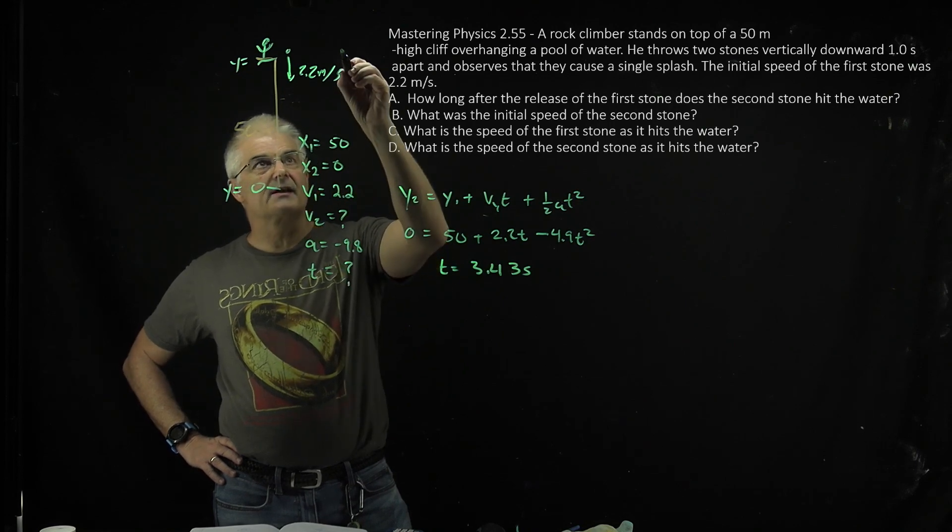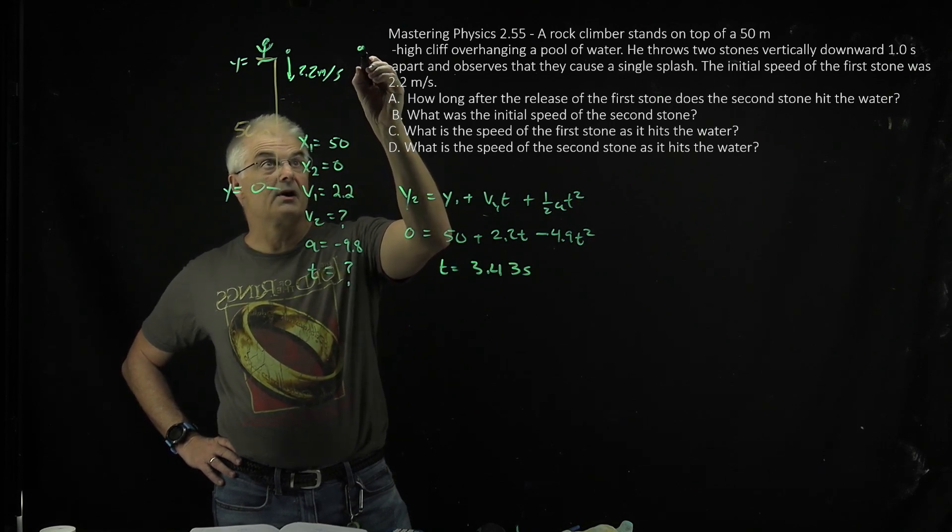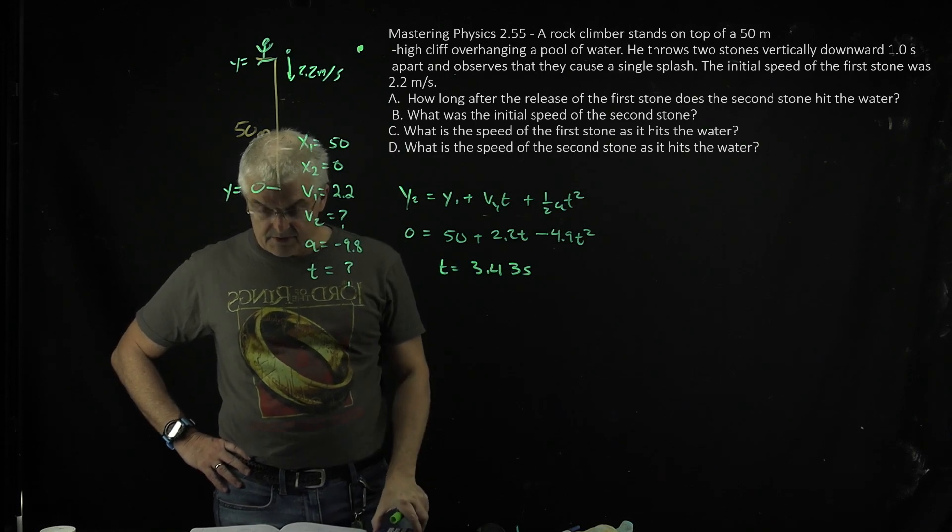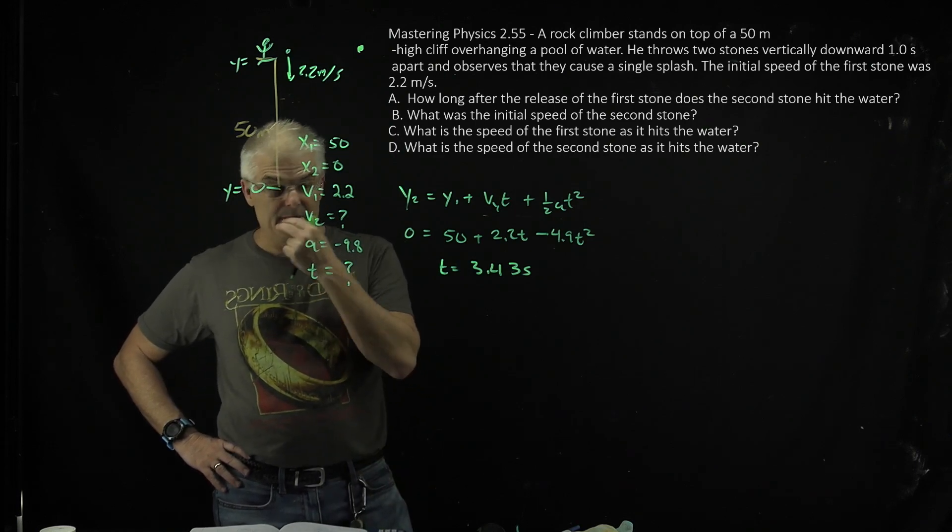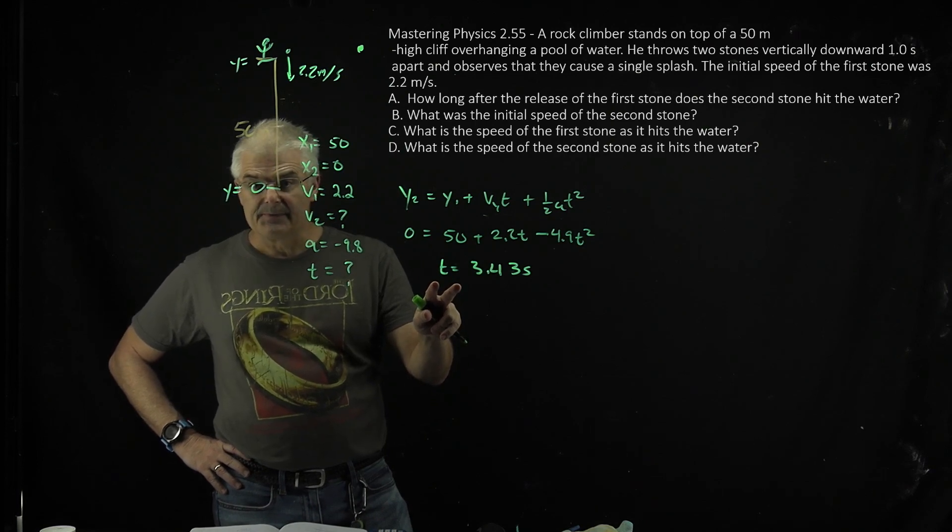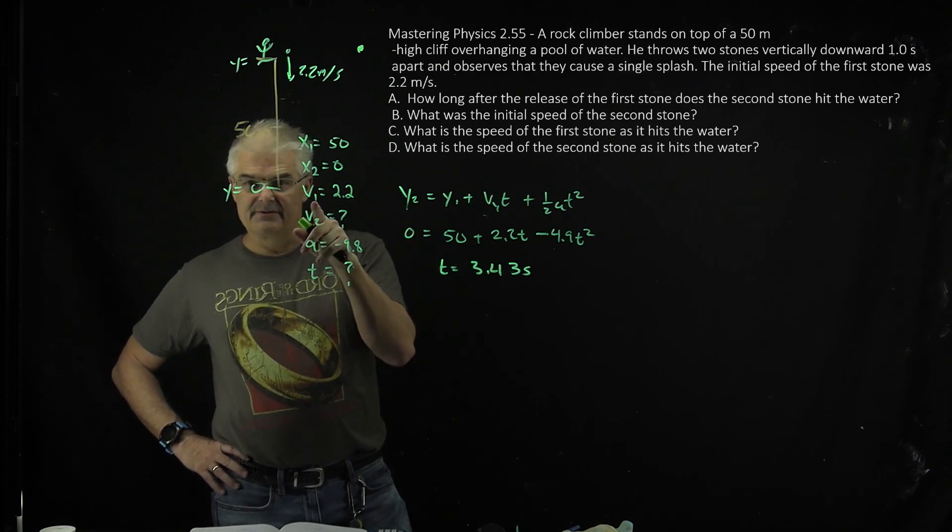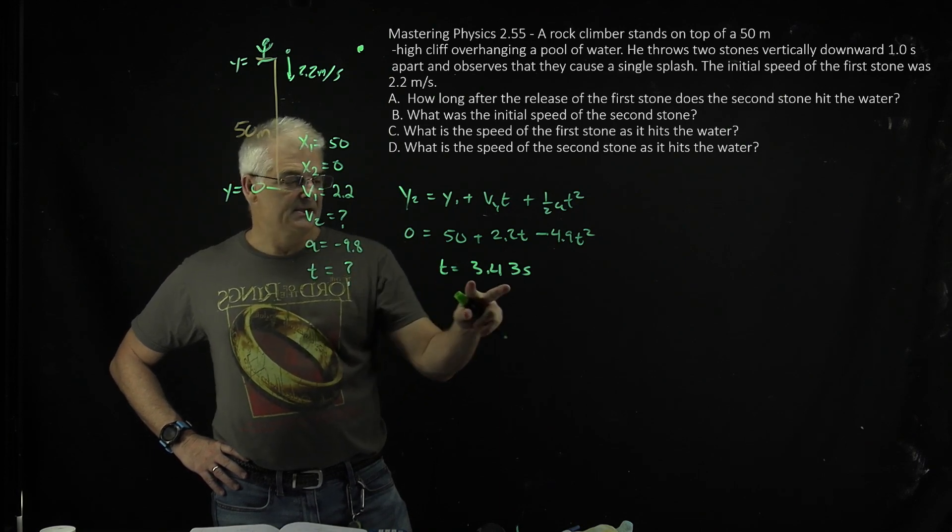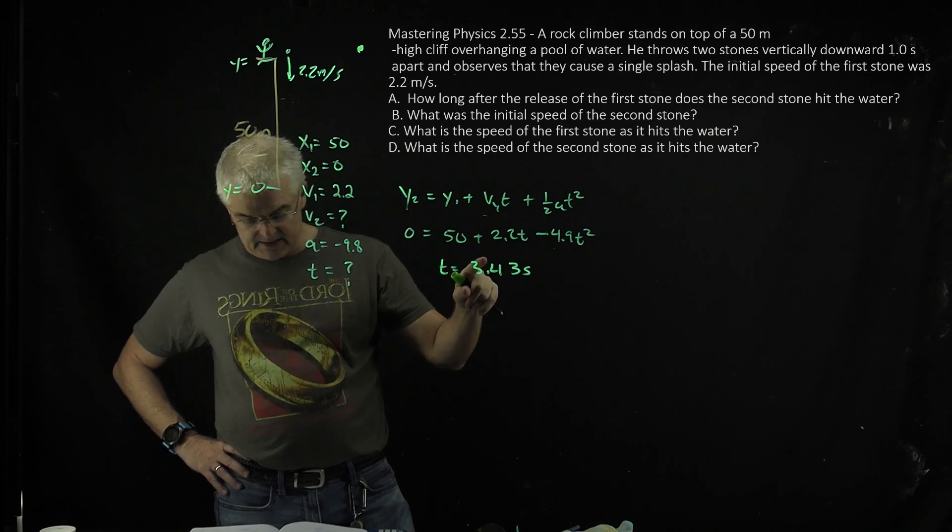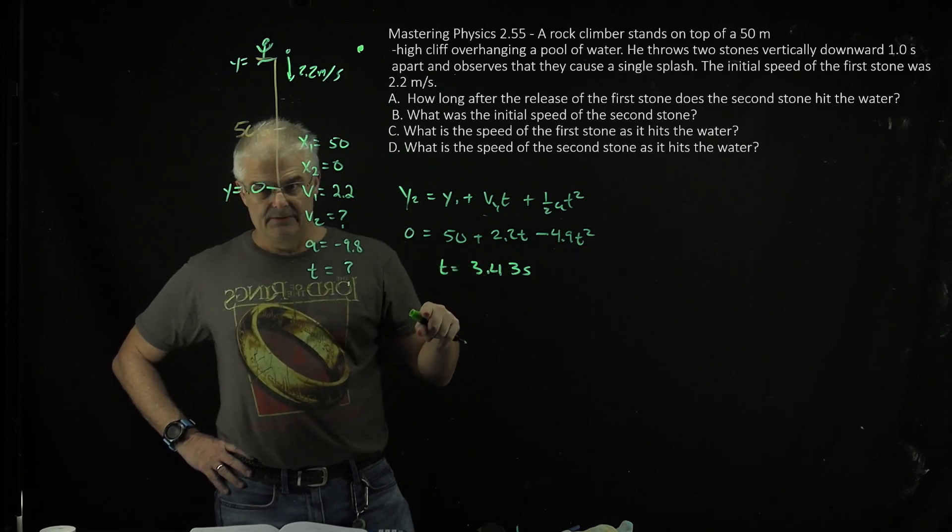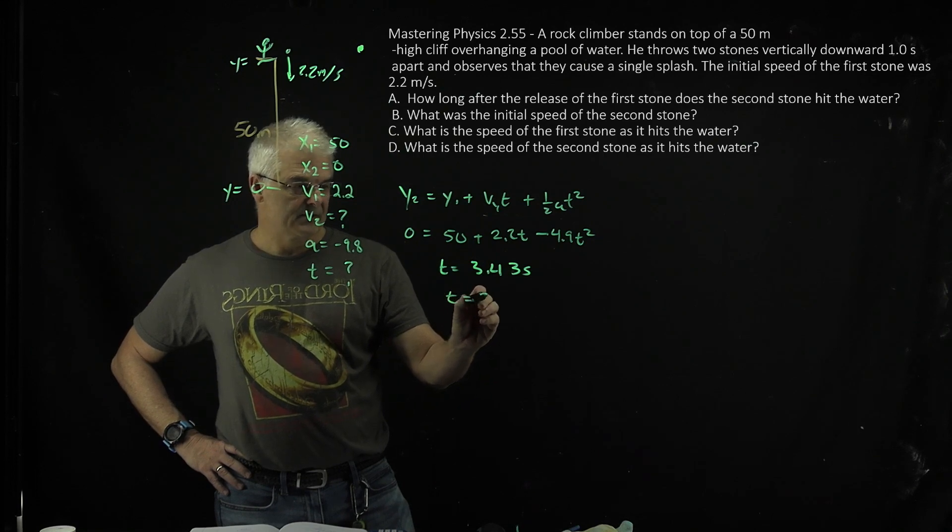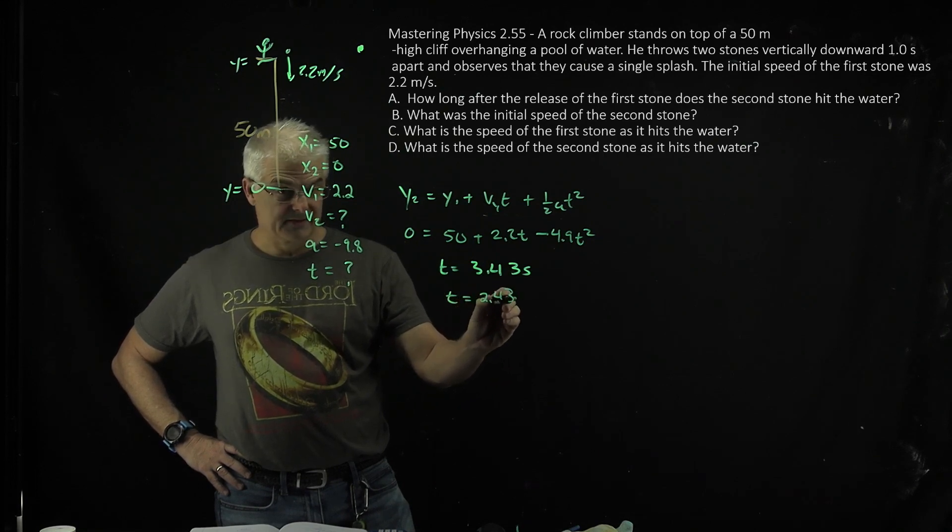So in the second rock, right, there's a second rock. It's going to hit at the same time. Then what I want to do is the question that needs to ask, I almost need to ask the question B first. What is the initial speed of the second stone? Because it needs to land in 3.43 seconds, but you release it one second later, right? And so it has to travel downward at 2.43 seconds. Does that make sense?